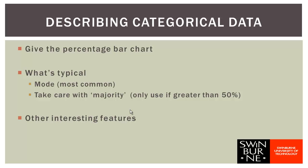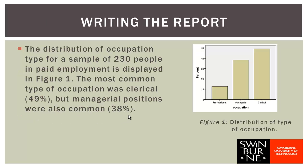Having described what's typical, you might look at any other interesting features that stand out in the bar chart. A report might look something like this: 'The distribution of occupation type for a sample of 230 people in paid employment is displayed in Figure 1.' Notice we're referring to the caption, Figure 1, and the graph is carefully captioned with a title. The most common type of occupation was clerical, 49%, but managerial positions were also common, 38%. We don't need to describe every bar — just a few important features.